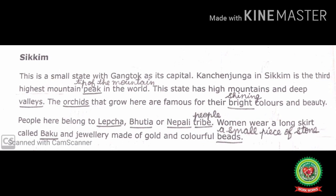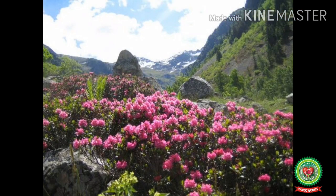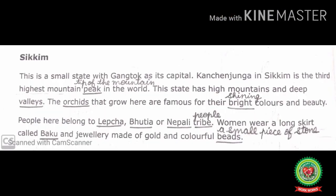Valleys means a lowland area between two mountains. The orchids that grow here are famous for their bright colors and beauty. Bright means shining. Orchids are plants with beautifully colored flowers that have an unusual shape, and they grow in Sikkim. People here belong to the Lepcha, Bhutia, or Nepali tribe. Tribe means a group of people.